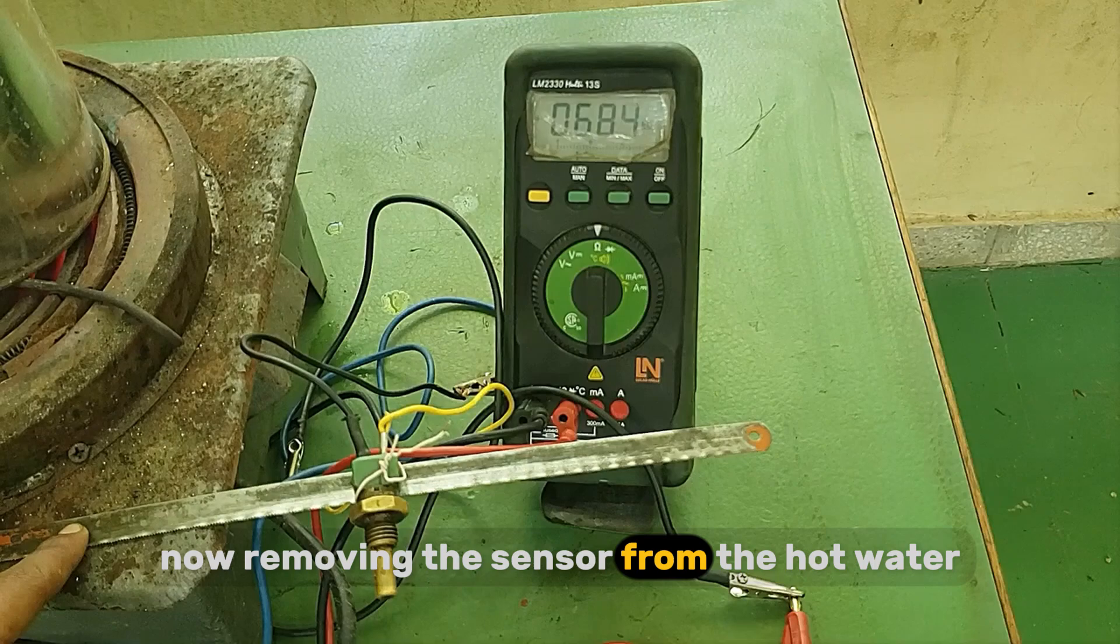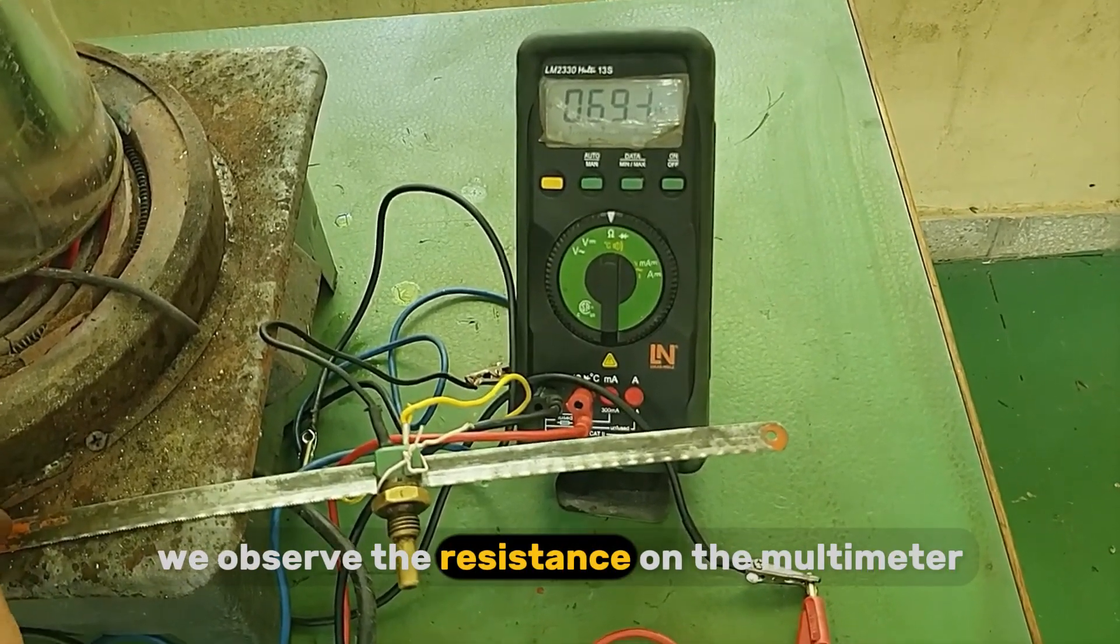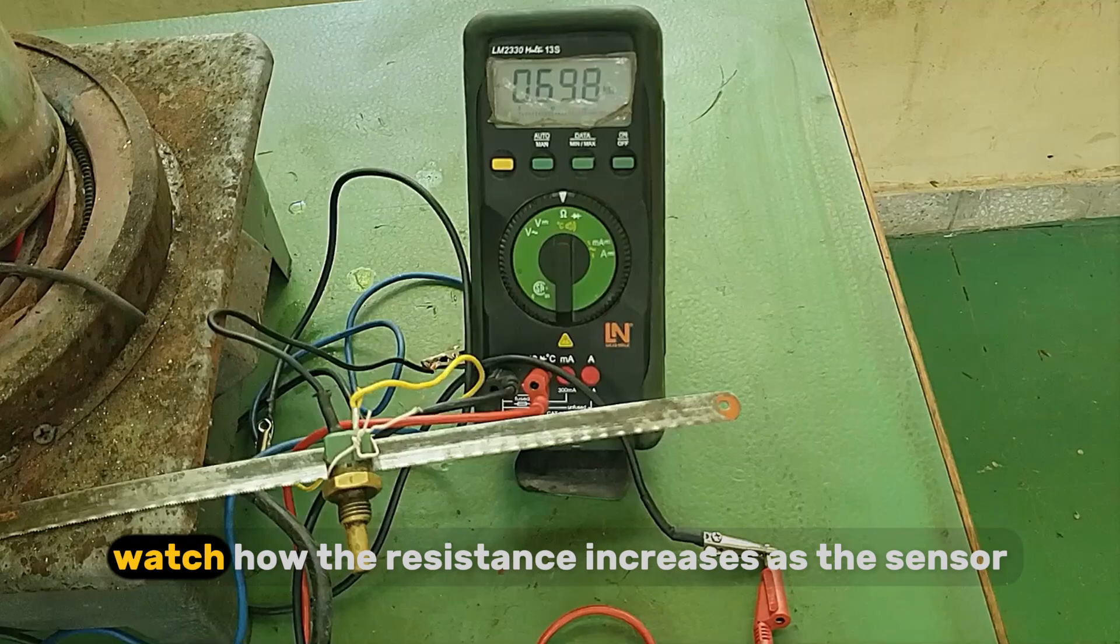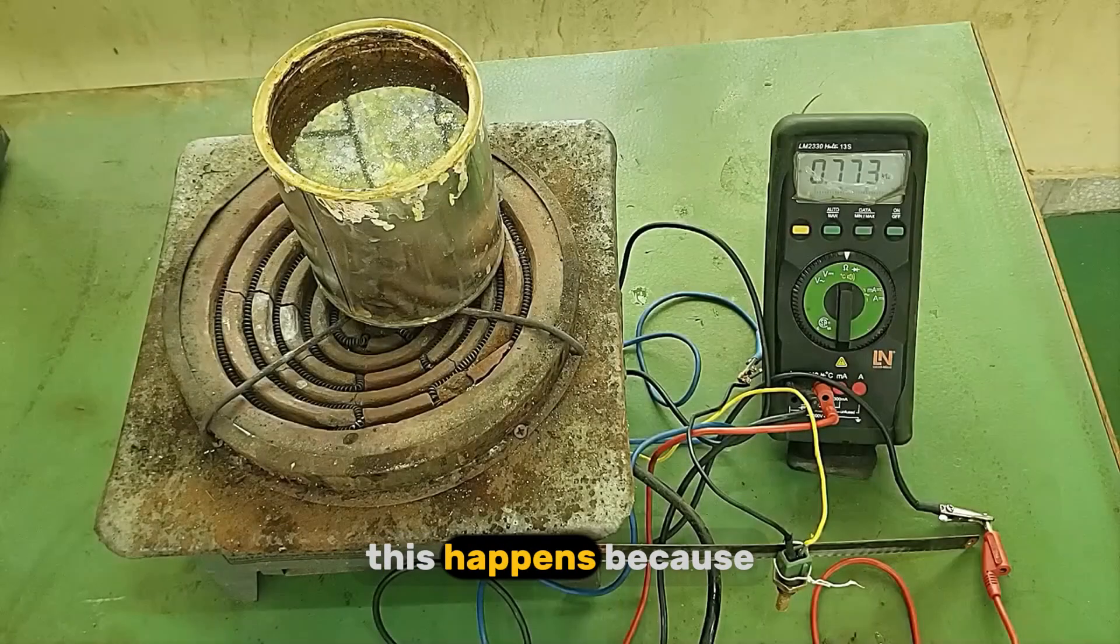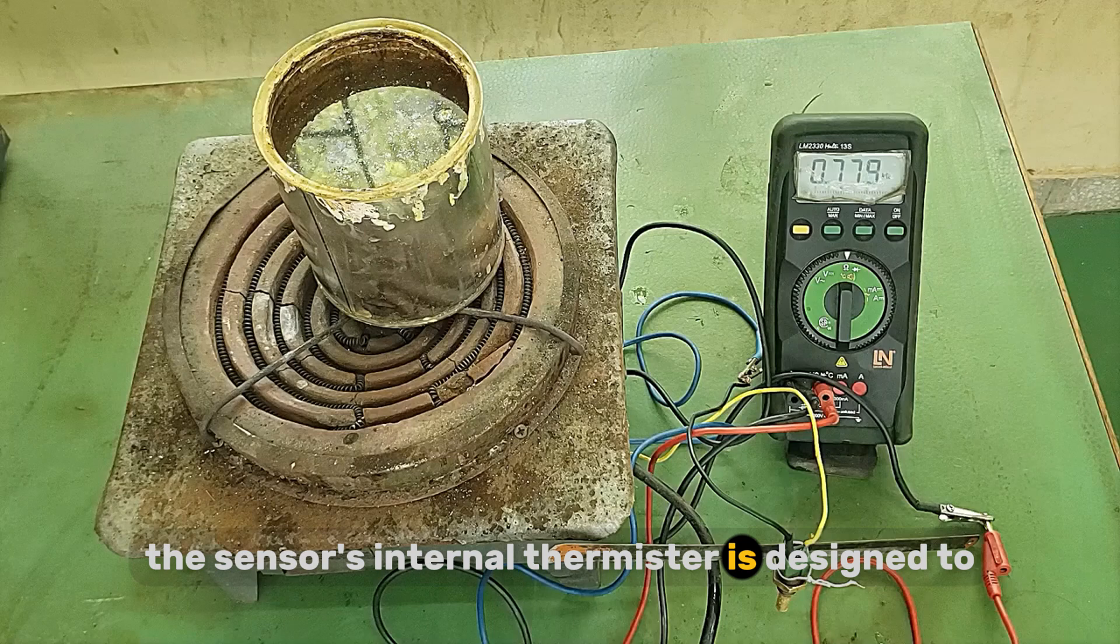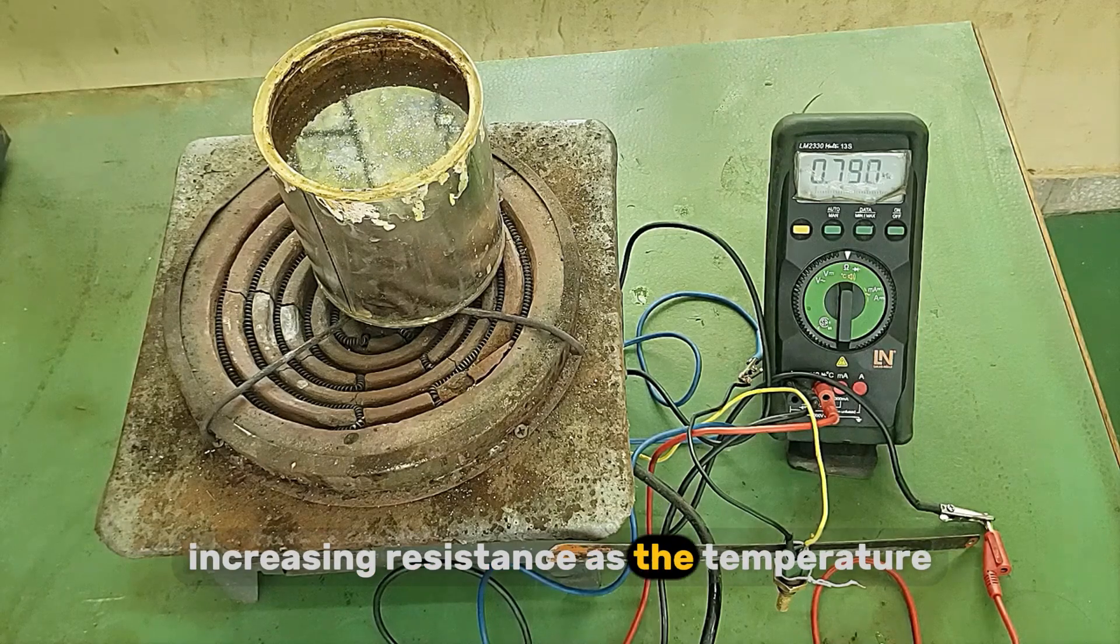Now removing the sensor from the hot water, as it starts to cool down, we observe the resistance on the multimeter. Watch how the resistance increases as the sensor cools. This happens because the sensor's internal thermistor is designed to react to temperature changes, increasing resistance as the temperature decreases.